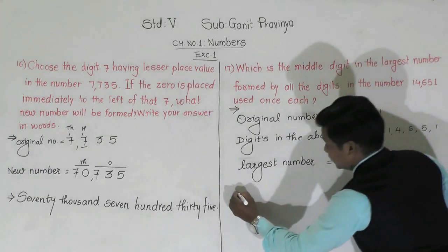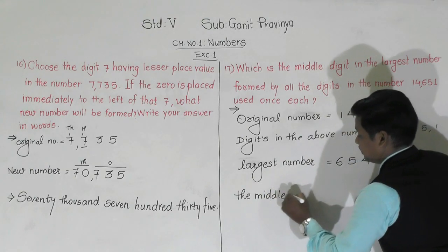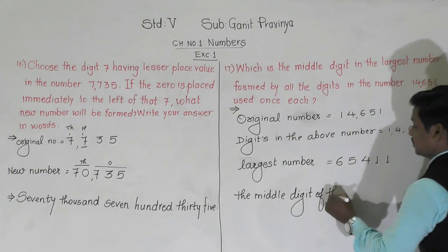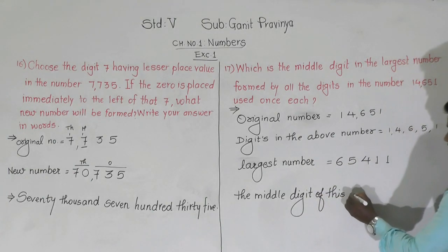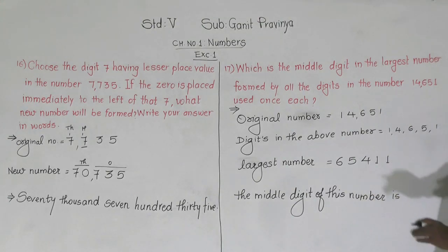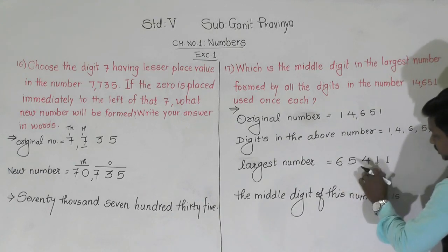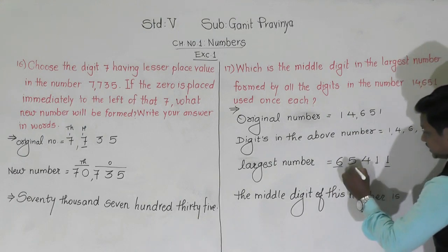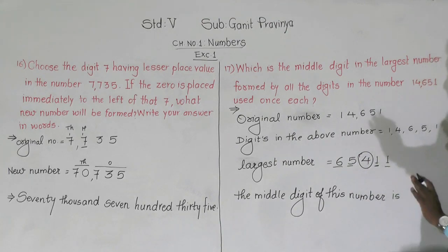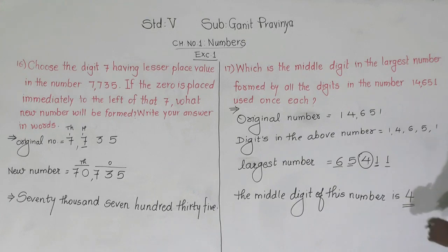Now, the middle digit of this number 65,411. There are 5 total digits. This is the starting, this is the ending. This is the second from starting and this is the second from ending. And this 4 is exactly in the middle. So the middle digit of this number is 4.